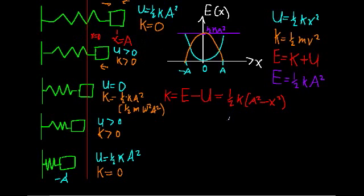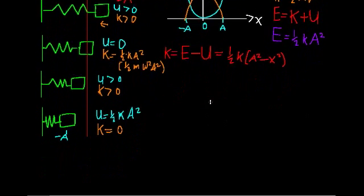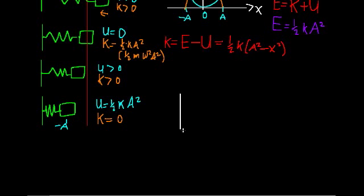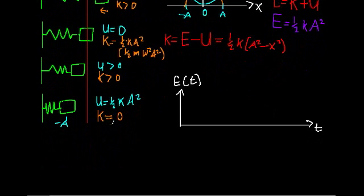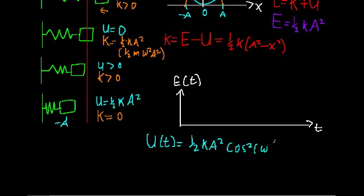Let's extend this by talking about what happens with the energy as a function of time. We draw two axes with time on the horizontal and energy on the vertical. In the last video we found the potential energy and kinetic energy as a function of time by plugging in the general solution — the amplitude-phase form of x and v. We found that the potential energy as a function of time is u equals one half k A squared times cosine squared of the quantity omega t minus phi.